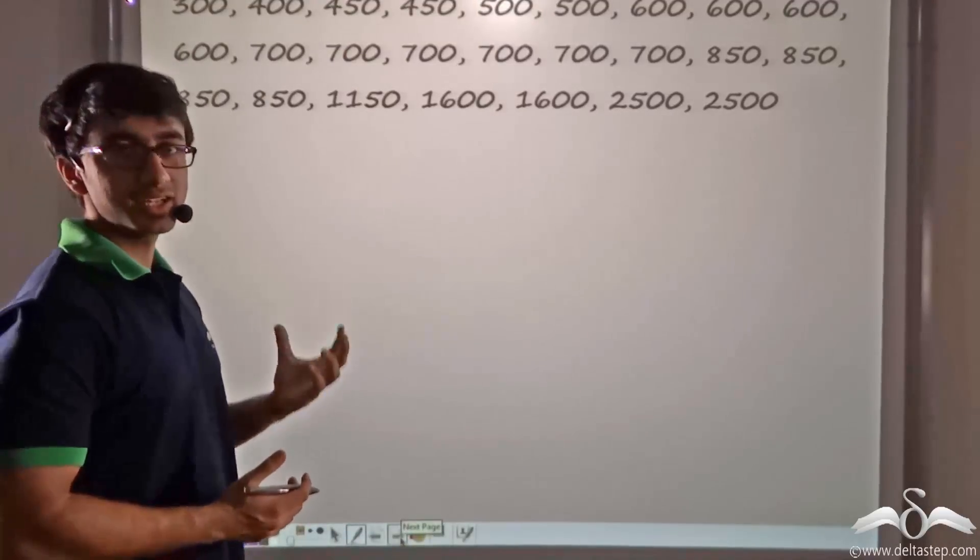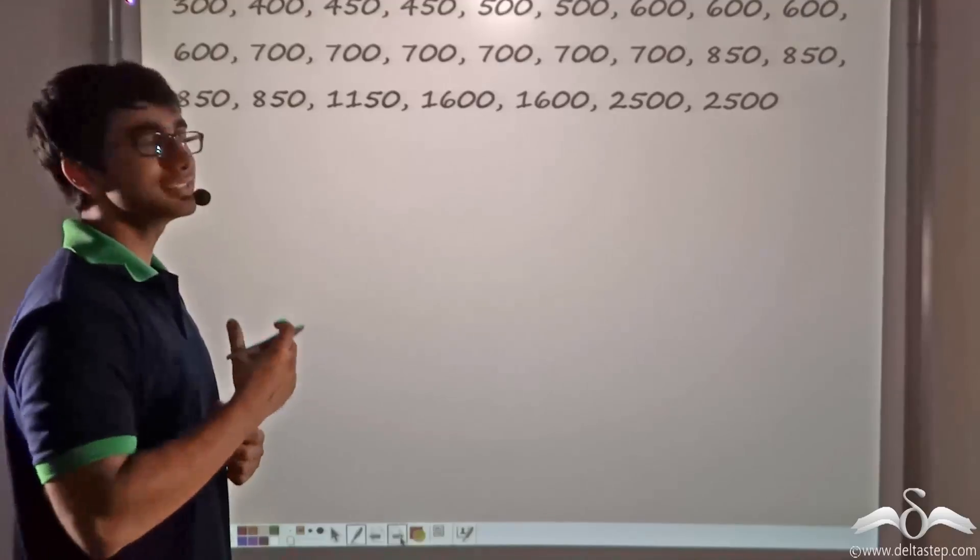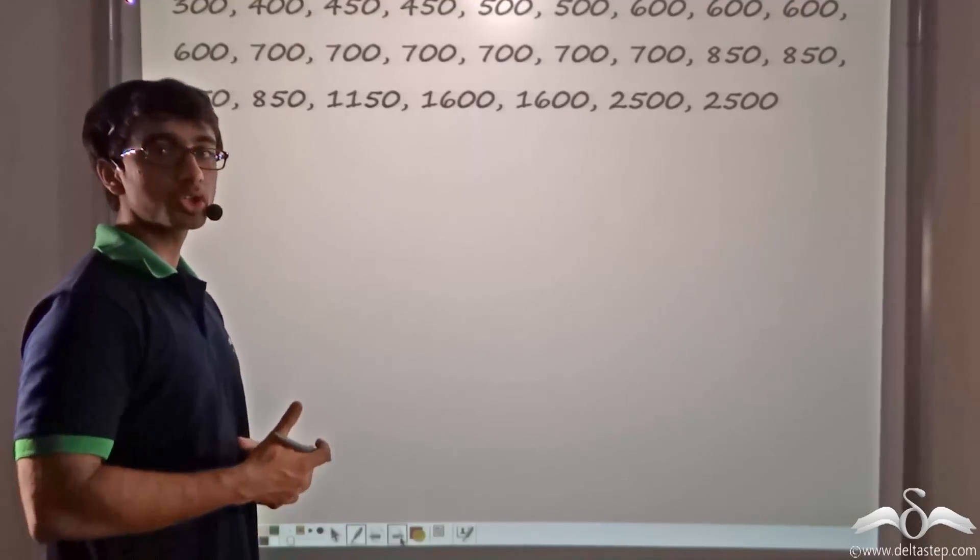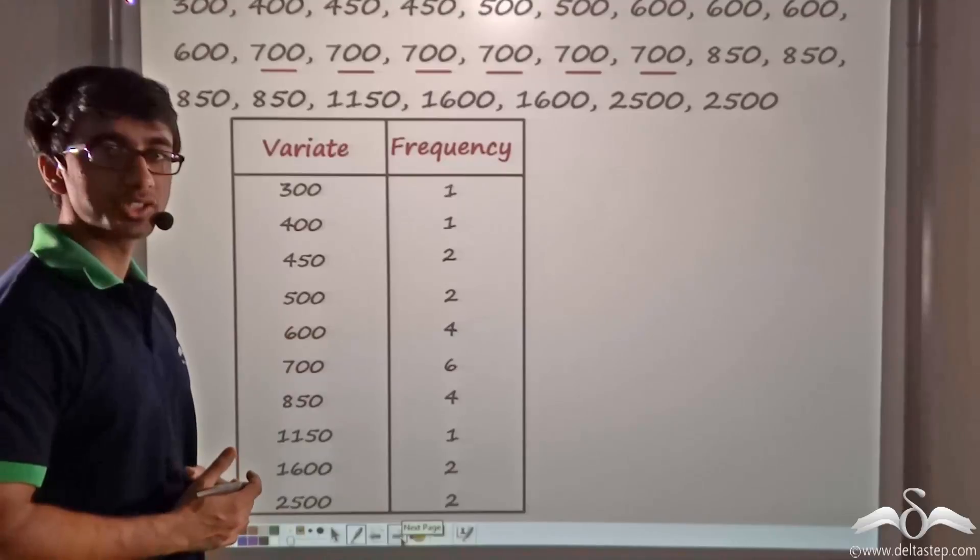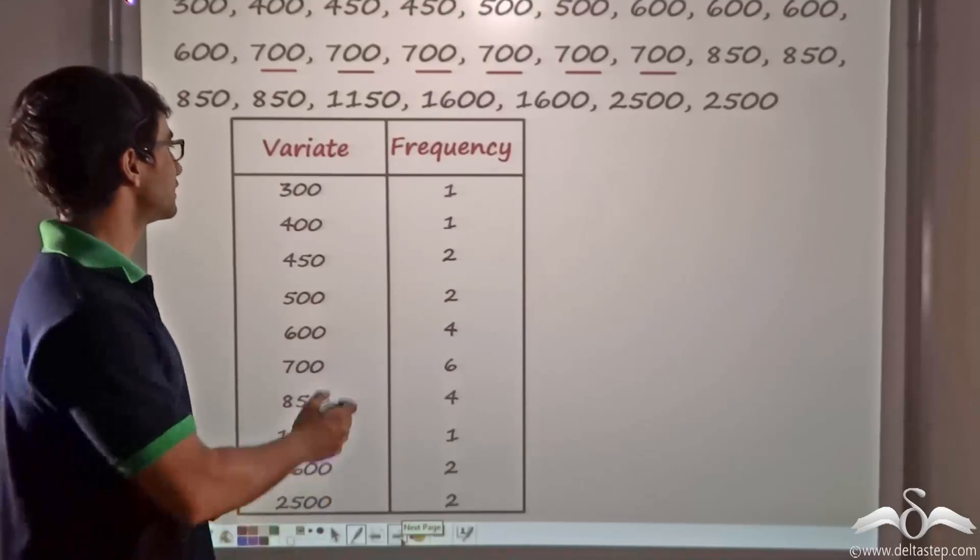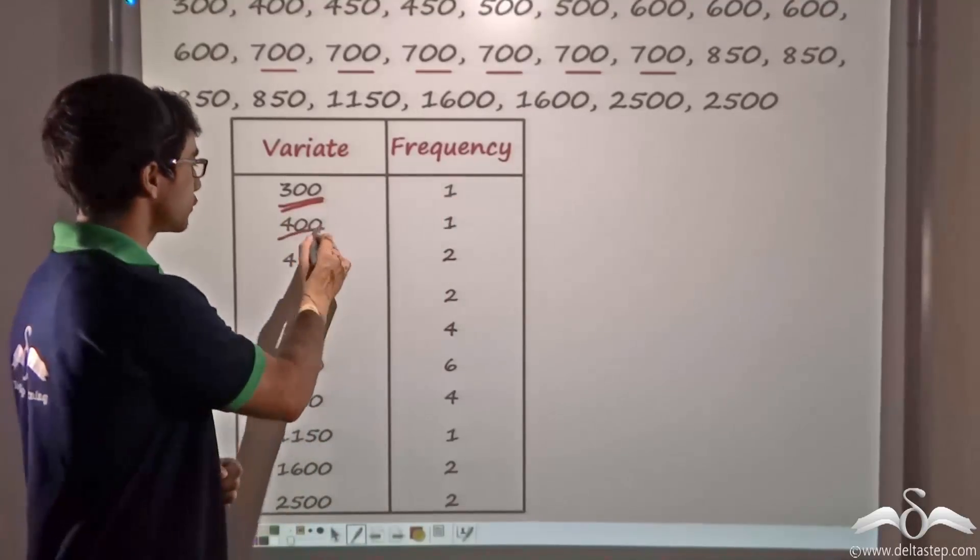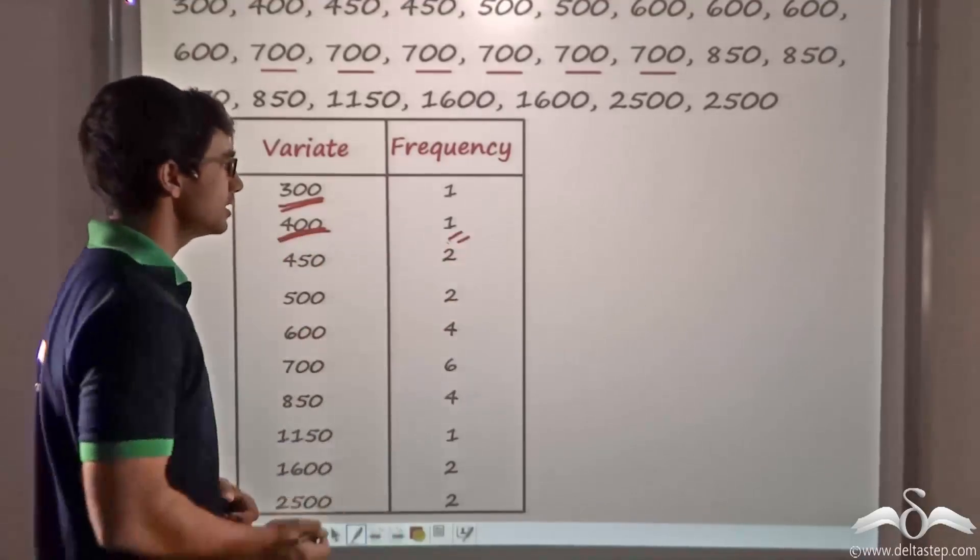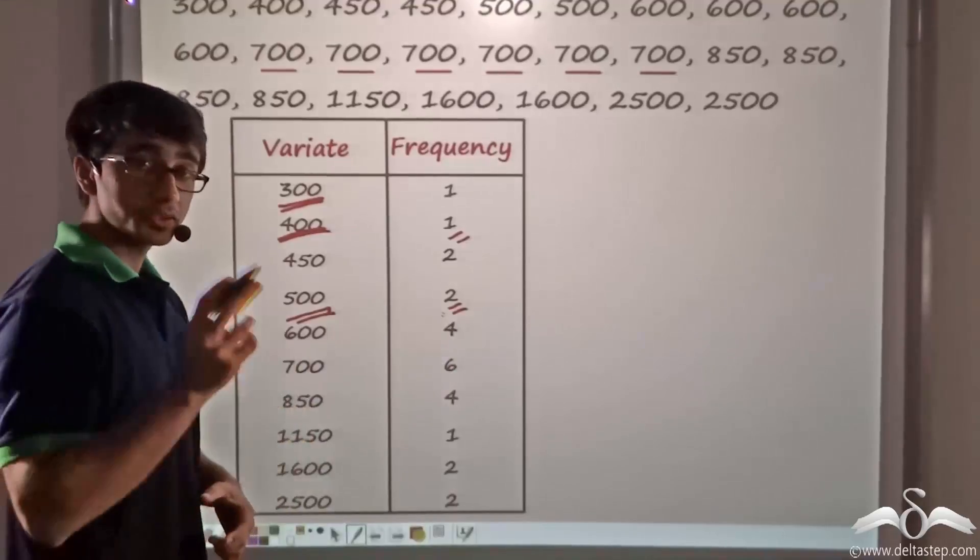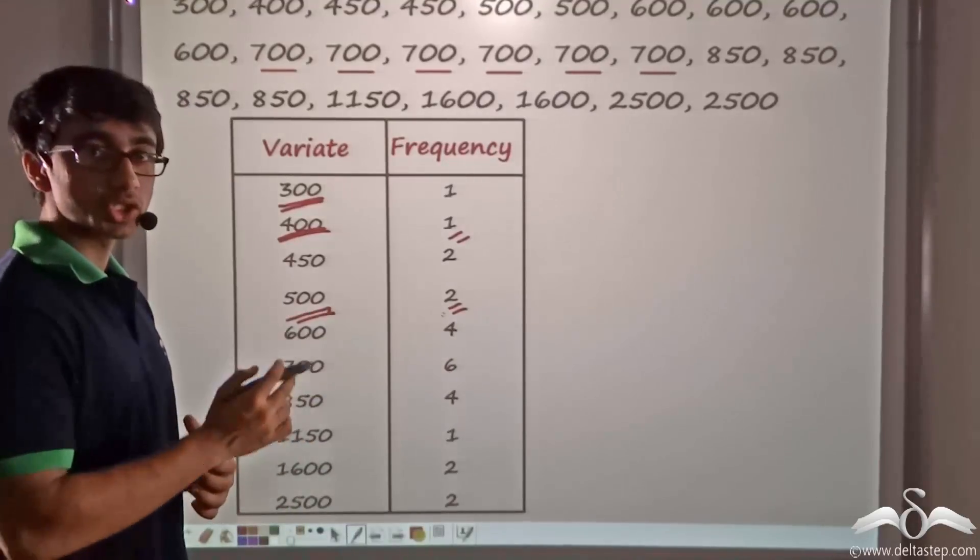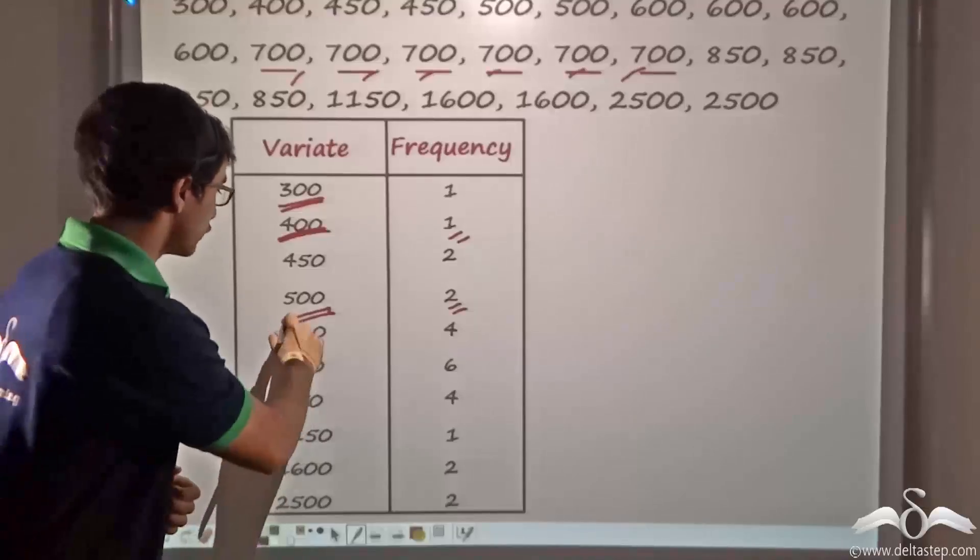So now again, we have considered the data that was arranged in ascending order. Now over here, if you notice, you will find that certain dresses which have the same price have been bought by more than one parent. So now if I draw a simple frequency distribution table, what will I find? I find the dress which costs 300 has been bought only once. Similarly, the dress which costs Rs 400 also has been bought only once. So in a similar manner, I can say that the dress which costs Rs 500 has been bought twice. Now if you notice closely, you will find that the dress which costs Rs 700 has been bought six times or by six for six children.